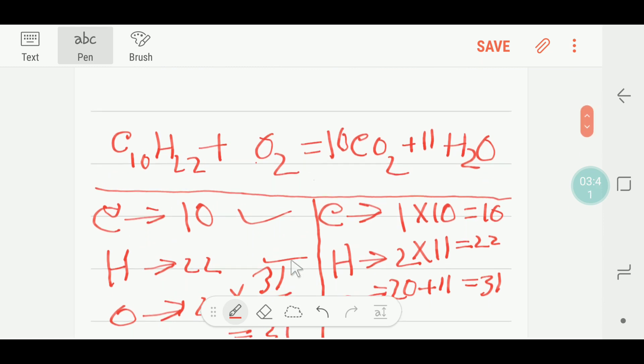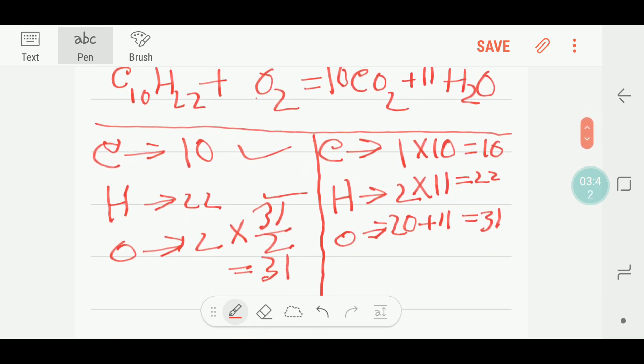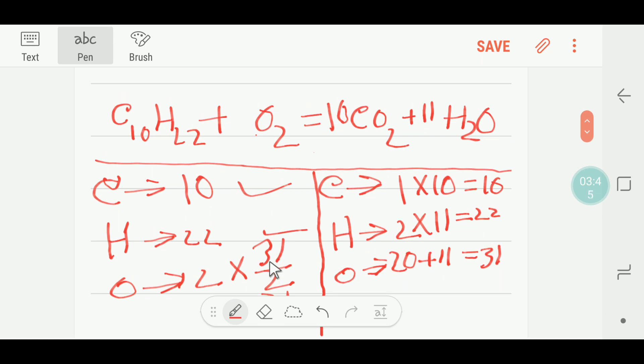Now I have to put here 31 by 2, because this 31/2 will go before oxygen. So I can put here 31/2, so this reaction is balanced.